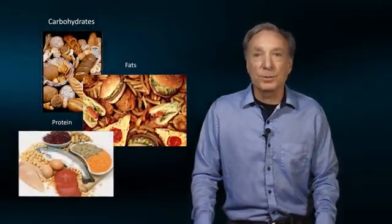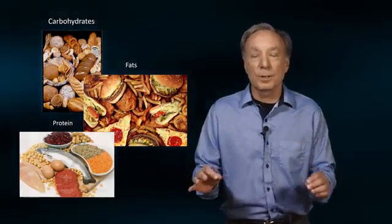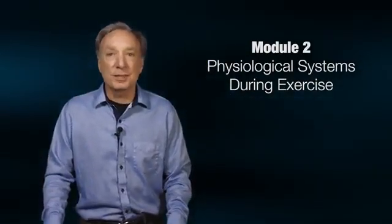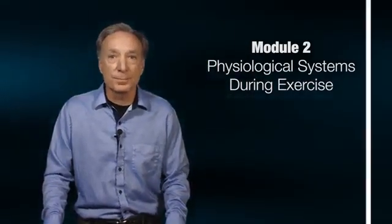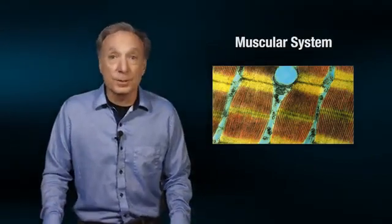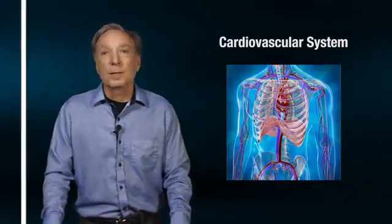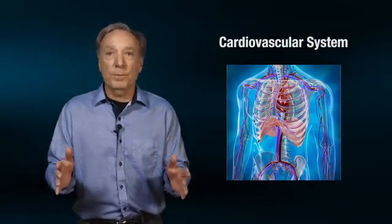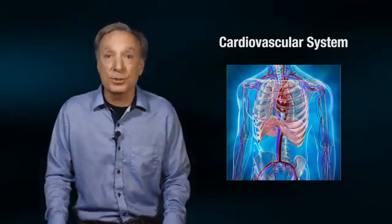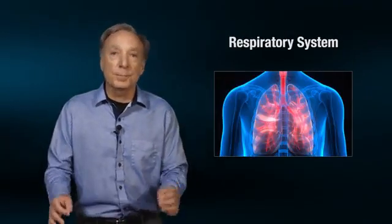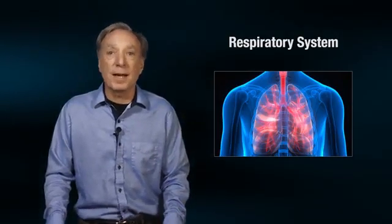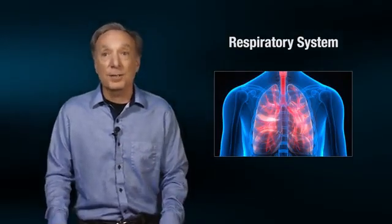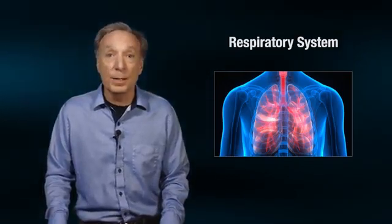Module 2 will address the adjustments that the body's many physiological systems need to make in order to respond to the stress imposed during a single bout of exercise. This will include the muscular system or skeletal muscles. It will also include the adjustments required by the cardiovascular system to ensure proper blood flow to the working muscles for delivery of adequate oxygen and nutrients for fuel, as well as the respiratory system's role in maintaining oxygen levels and removing carbon dioxide.